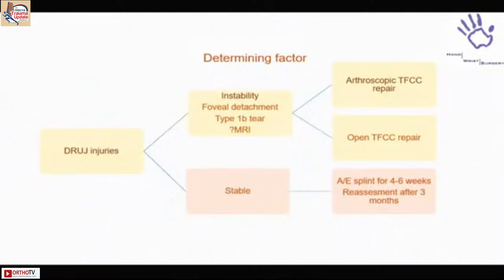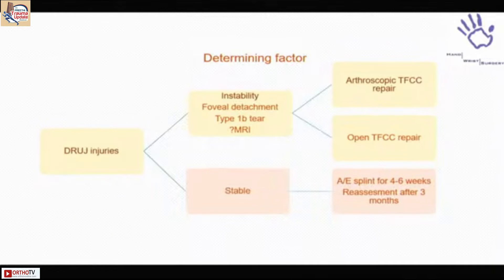When you see a patient with acute painful DRUJ, what matters is whether the joint is stable or unstable. If stable, even though they are in pain, you just need an above-elbow splint in neutral rotation for 4 to 6 weeks and then reassess. But if you suspect instability, the possible attached lesion could be a foveal detachment — a 1B Palmer injury — and that is where MRI comes in. For a significant tear in a high-demand patient, you can go for arthroscopic or open TFCC repair.